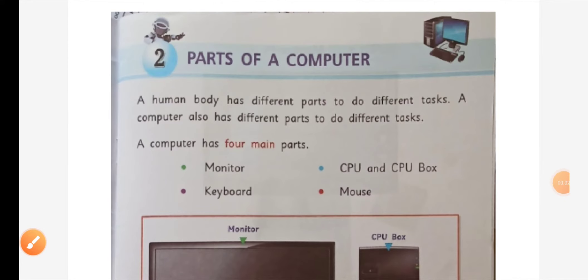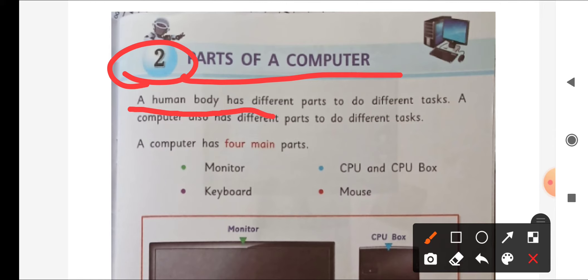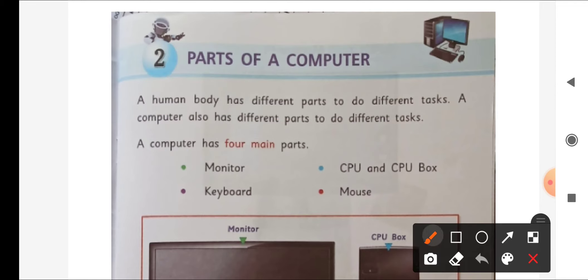Good morning students. I am your computer teacher and today we are going to learn chapter 2nd of your computer textbook, i.e. parts of a computer. So let's start. You will see in page number 7 our second chapter, i.e. parts of a computer. A human body has different parts to do different tasks. A computer also has different parts to do different tasks.